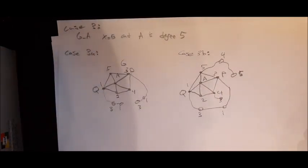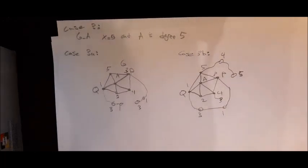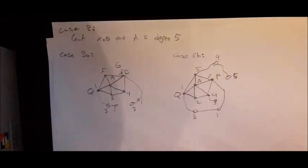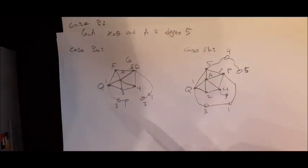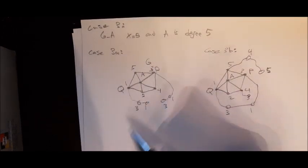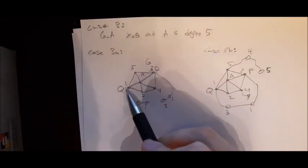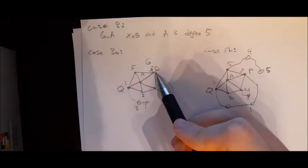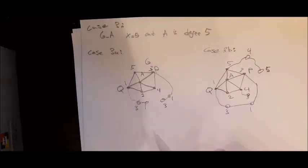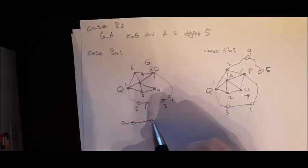This is where the theorem gets more tricky. In cases three and four, G minus A has chromatic number five and A is of degree exactly five. This means G minus A cannot be colored with fewer than five colors, and A is connected to five vertices, all using all five colors. The key difference between these two cases involves vertices P and Q: P is colored three and Q is colored one.